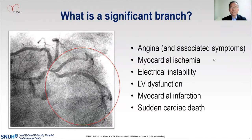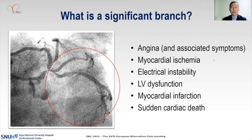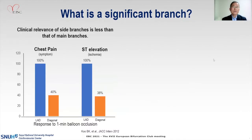How can you define the significance of a side branch? In some way, it's simple, because if we can define a branch which can cause symptoms like cardiac ischemia, electrical instability, LV dysfunction, myocardial infarction, or sudden cardiac death, it should be a significant branch. However, we know that the clinical relevance of a side branch is much less than the main branch.